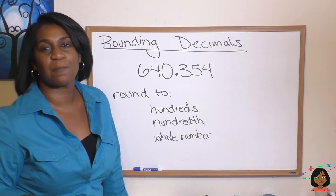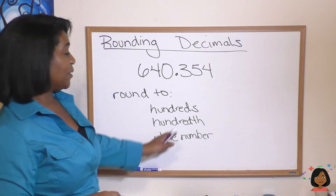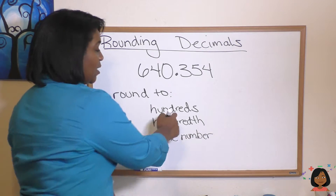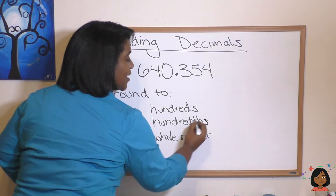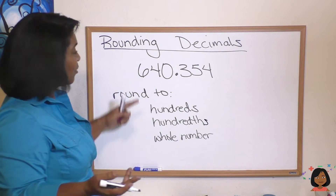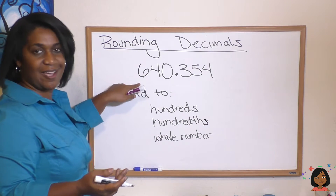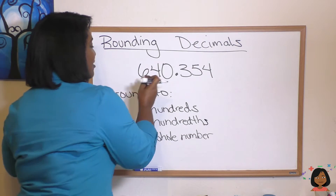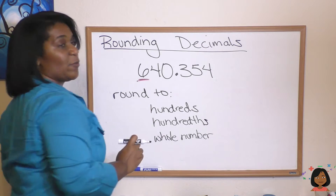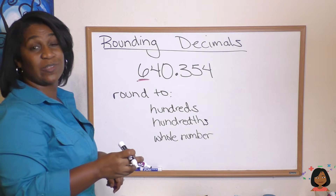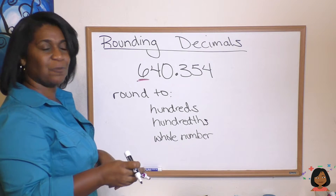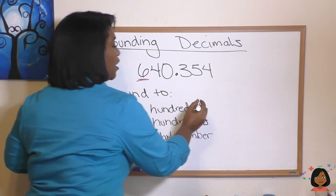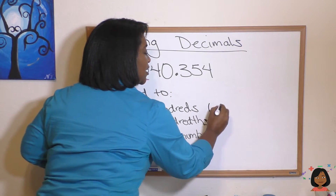Let's round this number to the hundreds. Now, because there's no 'th' on the end, I'm going to note there's no 'th' on the end in hundreds — we're talking about this hundreds place. So I'm going to highlight my 6 and again, we look to the right. We see it's a 4, which means we get to keep our 6. So this will go to 600.